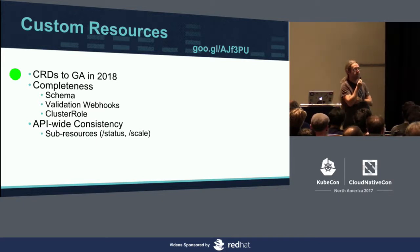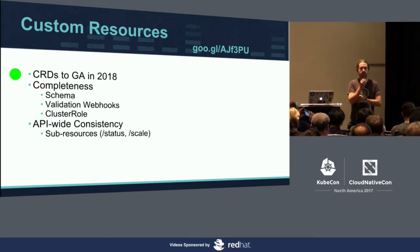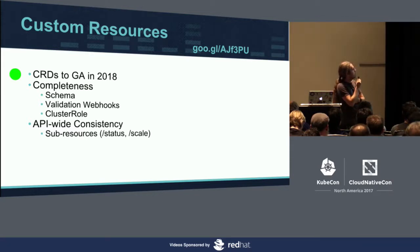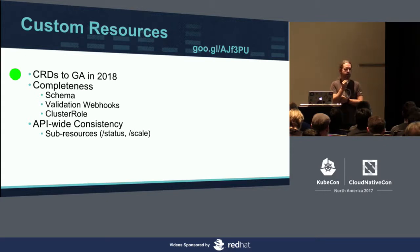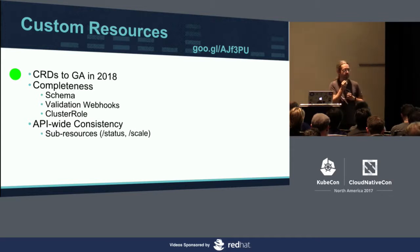In 2018, I expect CRDs to go to GA. Along the way I expect us to improve completeness — we already have a schema. We're going to make it easy to create validation webhooks and easy to set permissions, so it should integrate with RBAC. The author of the CRD should be able to define what roles it makes sense to operate on the CRD, without forcing the cluster administrator to understand that. I also expect to improve API-wide consistency — we have a status pattern, a scale pattern, and a few common sub-resources. I expect to add mechanisms to CRDs so that you can seamlessly integrate those, allowing HPA (horizontal pod autoscaler) to work on your CRD.